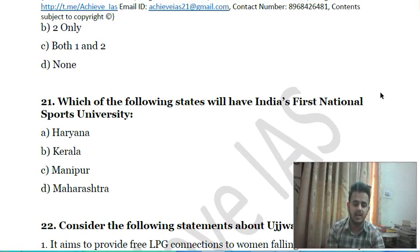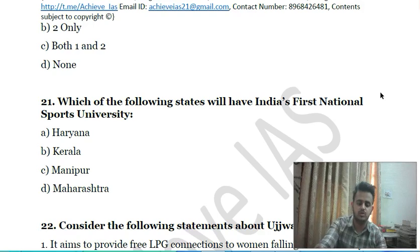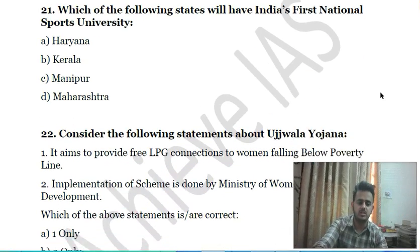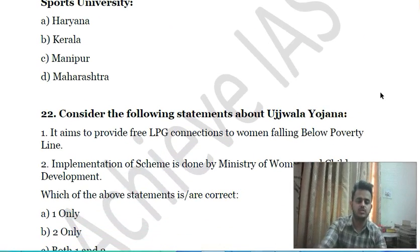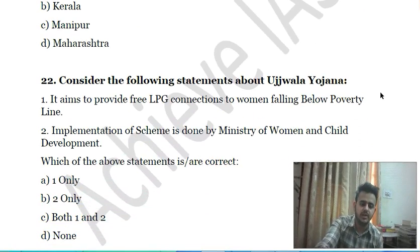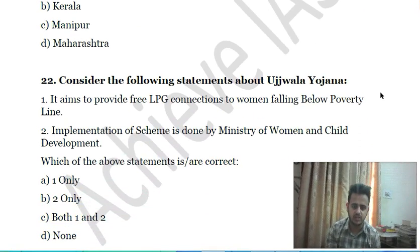Twenty-first question: which of the following states will have India's first National Sports University? A) Haryana, B) Kerala, C) Manipur, D) Maharashtra. Choose the correct answer.